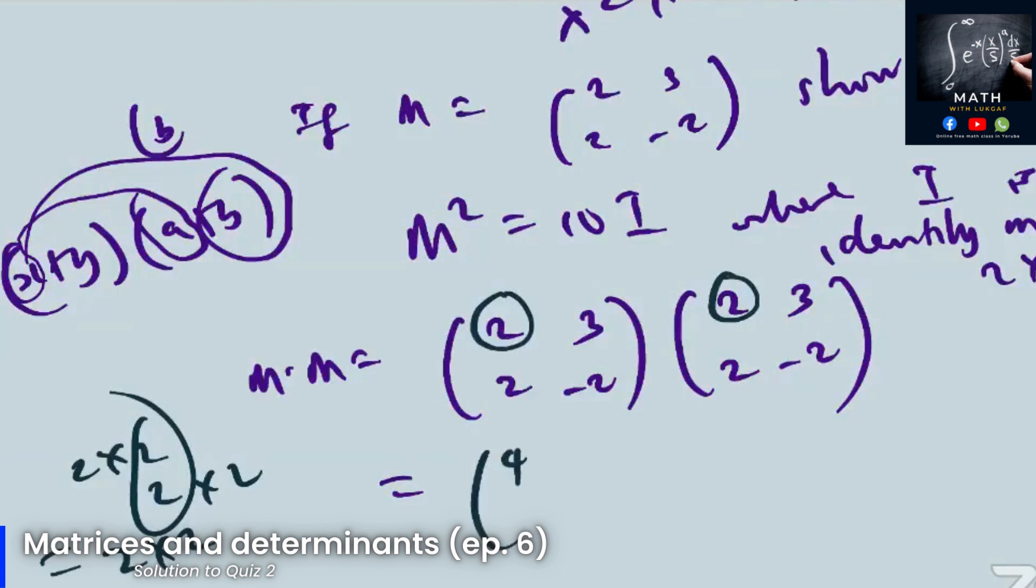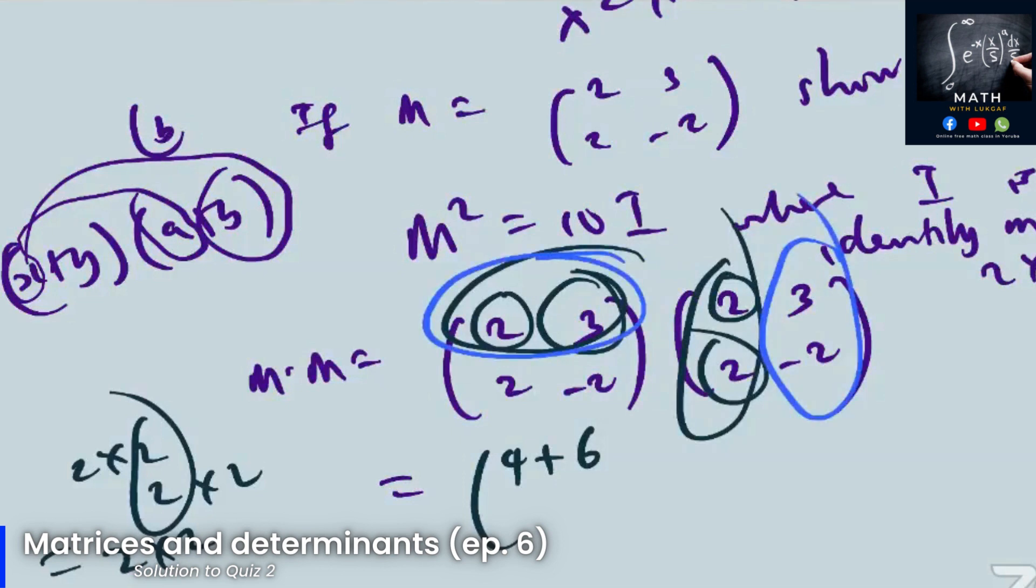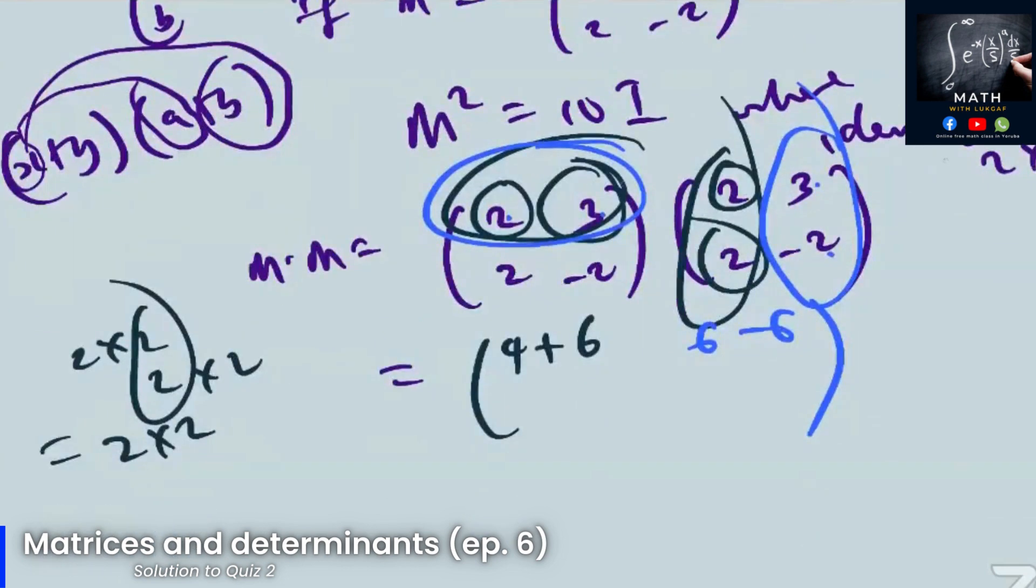2 times 2 is 4, plus 3 times 2 is 6, 3 times 2 is 6, minus 2. 2 times 2 is 4, minus 2 is -4, 2 times 3 is 6, minus 2 is -2,